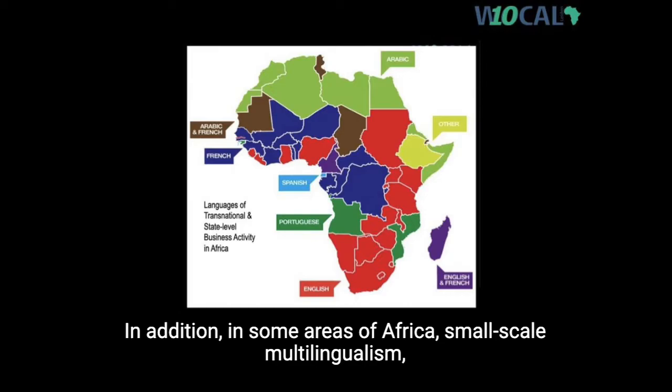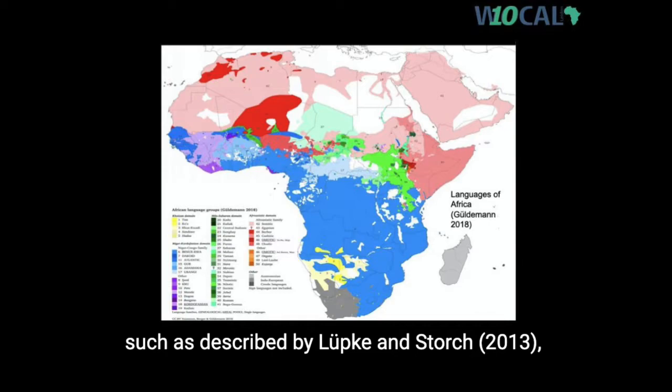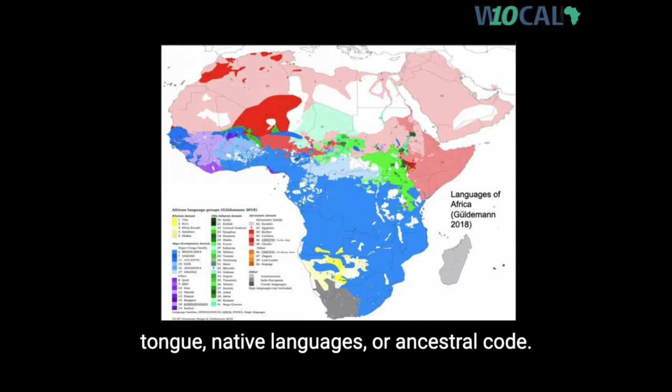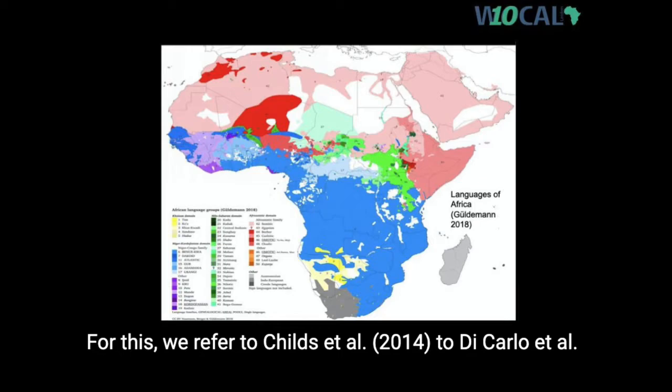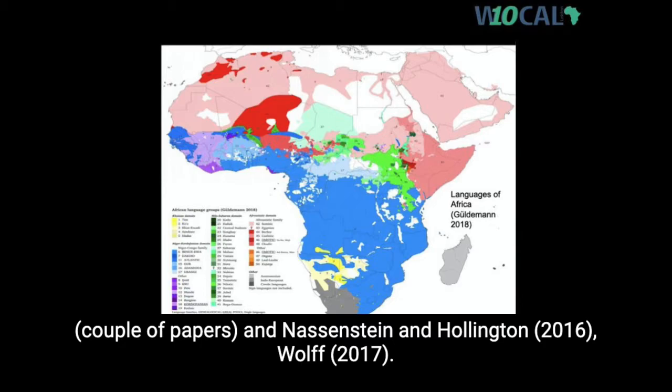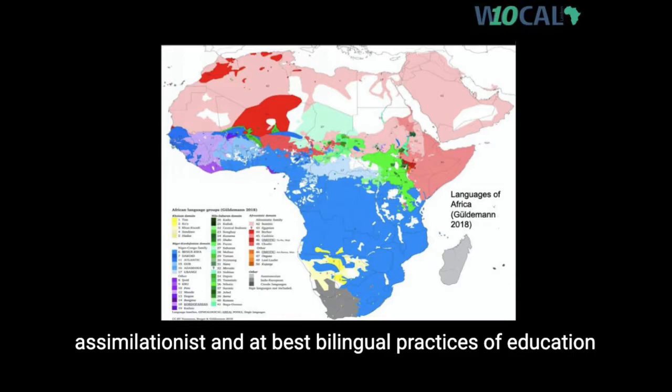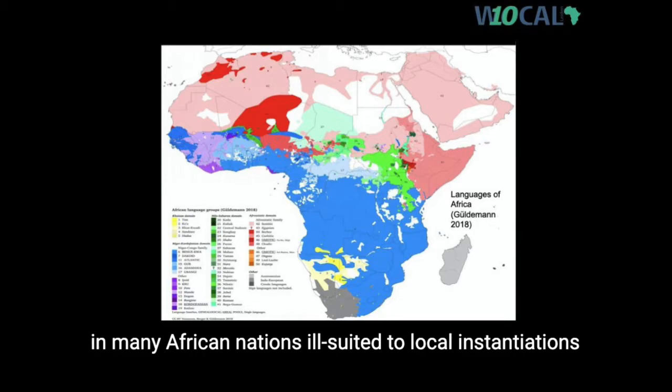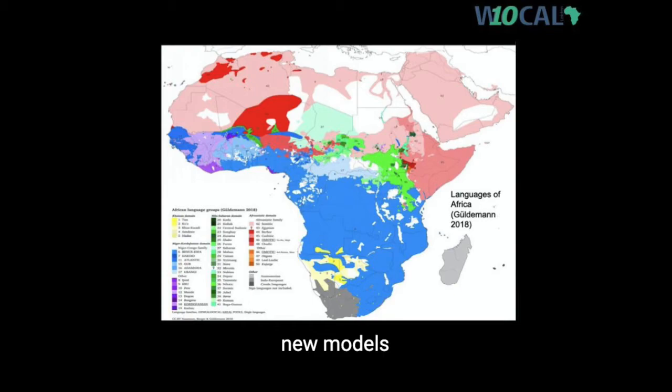In addition, in some areas of Africa, small-scale multilingualism, such as described by Lubke and Storch 2013, Lubke 2015, 2016, draws into question the concept of mother tongue, native languages, or ancestral code — see Childs et al. 2014, Carlo et al., and Nassenstein and Hollington 2016, Wolf 2017. The reality of small-scale multilingualism makes the assimilationist and at best bilingual practices of education in many African nations ill-suited to local instantiations of language ideologies, identities, and practices, and necessitates new models of multilingual accommodation.